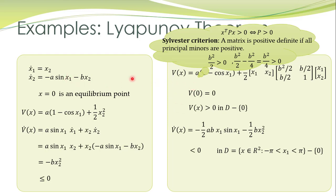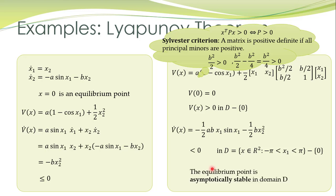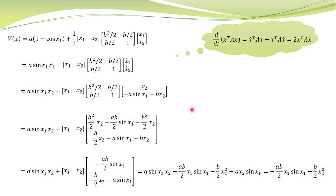Another student has taken a different candidate Lyapunov function for the same pendulum system — again it is positive definite. This student computed its derivative along system trajectories and it came out to be less than zero: this term is less than zero, this term is less than zero. So in this domain, V-dot is negative definite, and hence the equilibrium point is asymptotically stable. The computation of this derivative is left as a homework exercise.